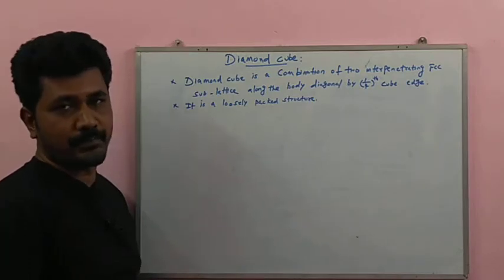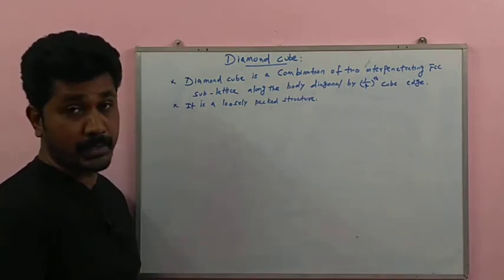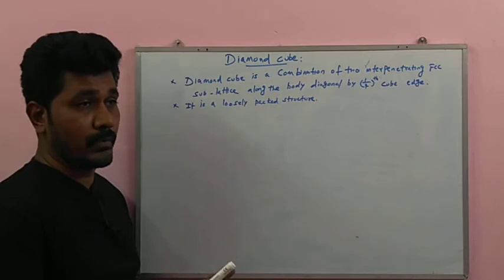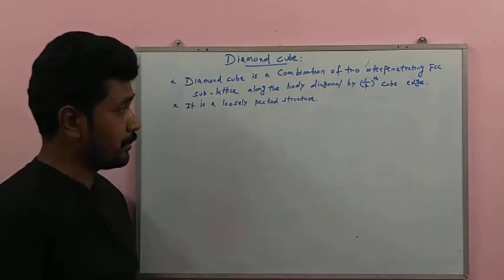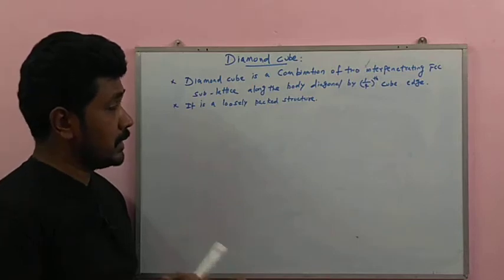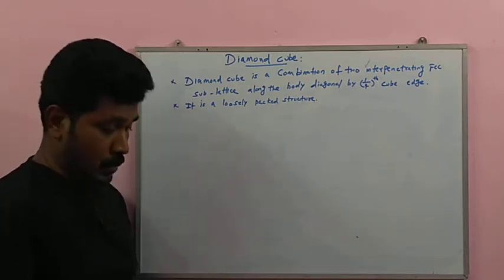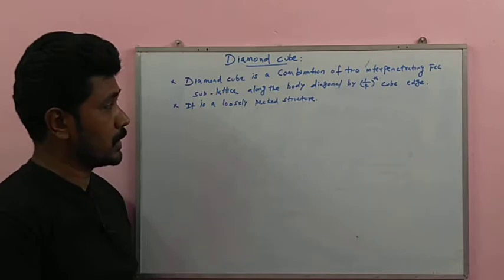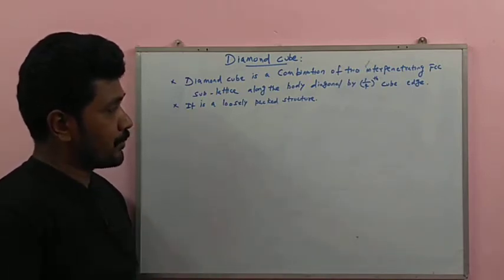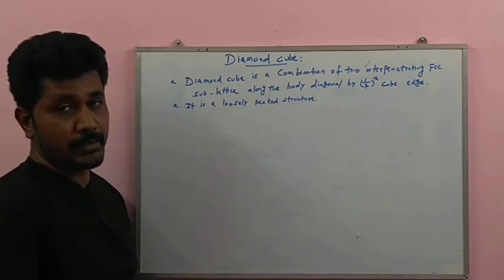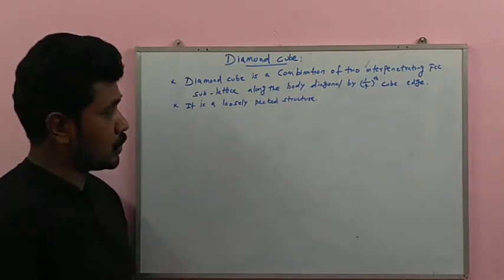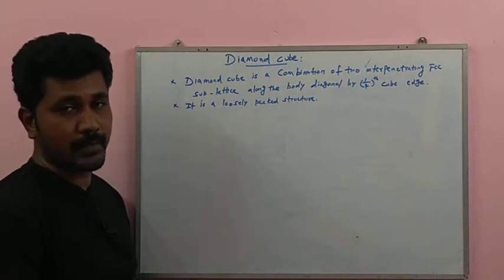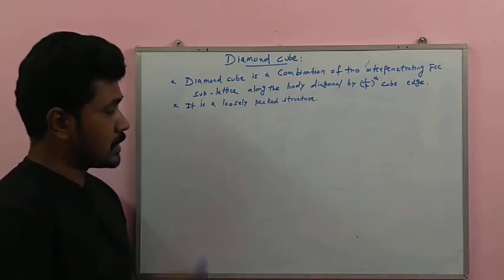For different cubic structures, simple cubic occupies 52% of atoms, body-centered cubic occupies 68%, face-centered cubic occupies 74%, and HCP also has 74% packing. The diamond structure, however, has only 32% occupancy — making it a loosely packed structure.